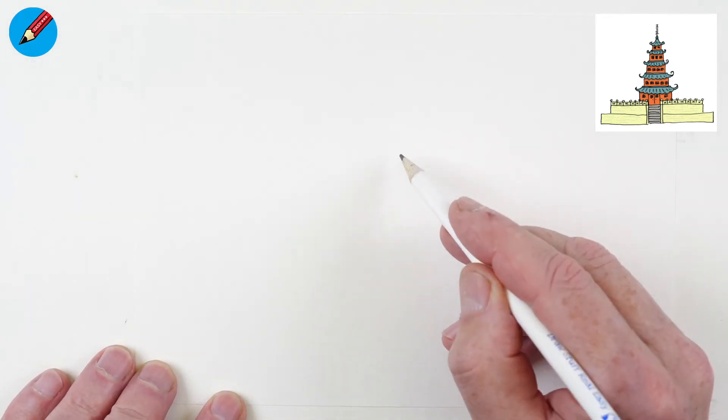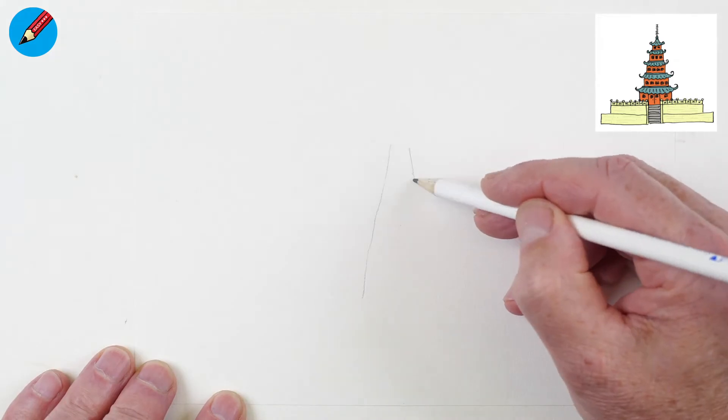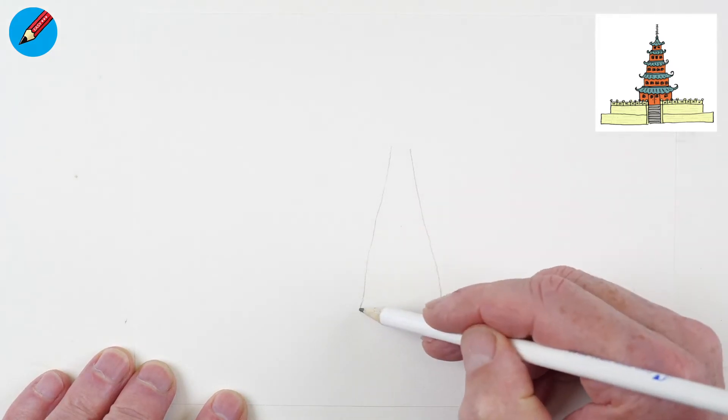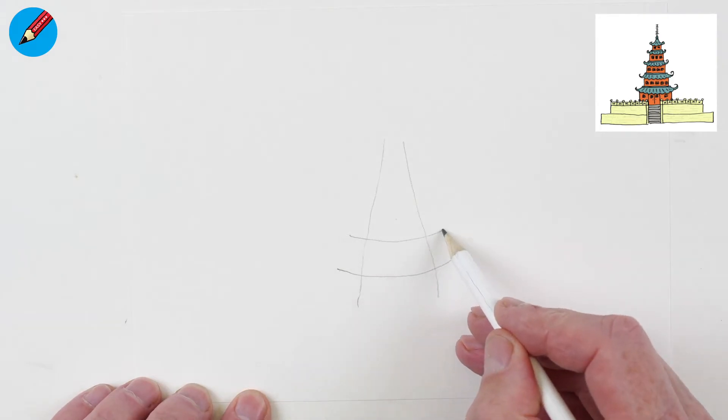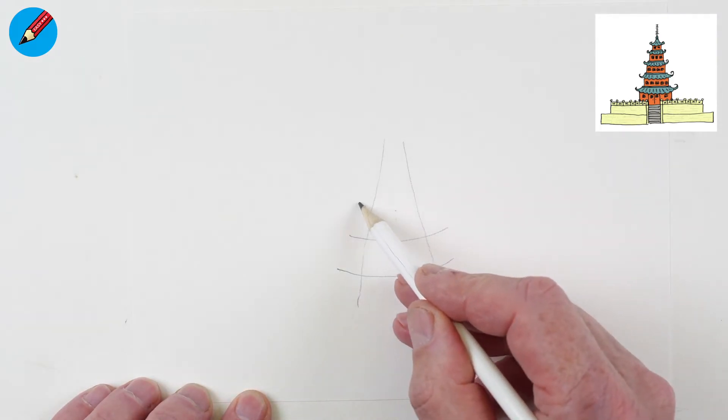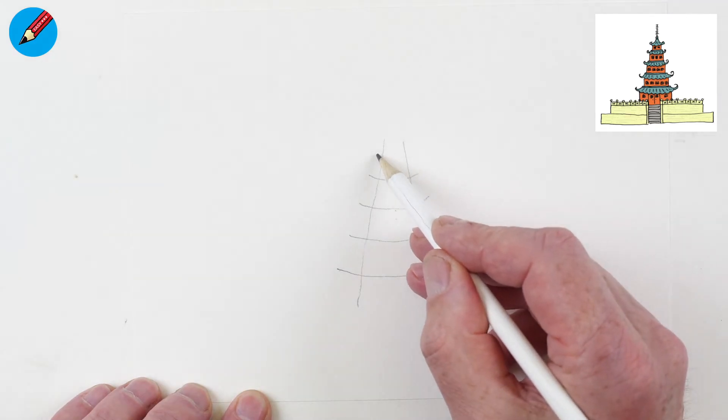To make it a bit easy for yourself drawing a pagoda, start by drawing two lines that are getting wider at the bottom, and then draw these curves. These curves want to be the same distance apart like that and they're getting kind of shorter.